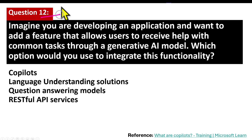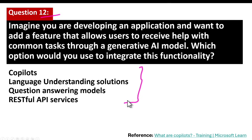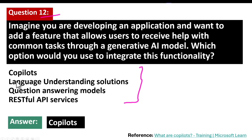Question number 12. Imagine you are developing an application and want to add a feature that allows users to receive help with common tasks through a generative AI model. Which option would you use to integrate this functionality? The correct answer is copilots.